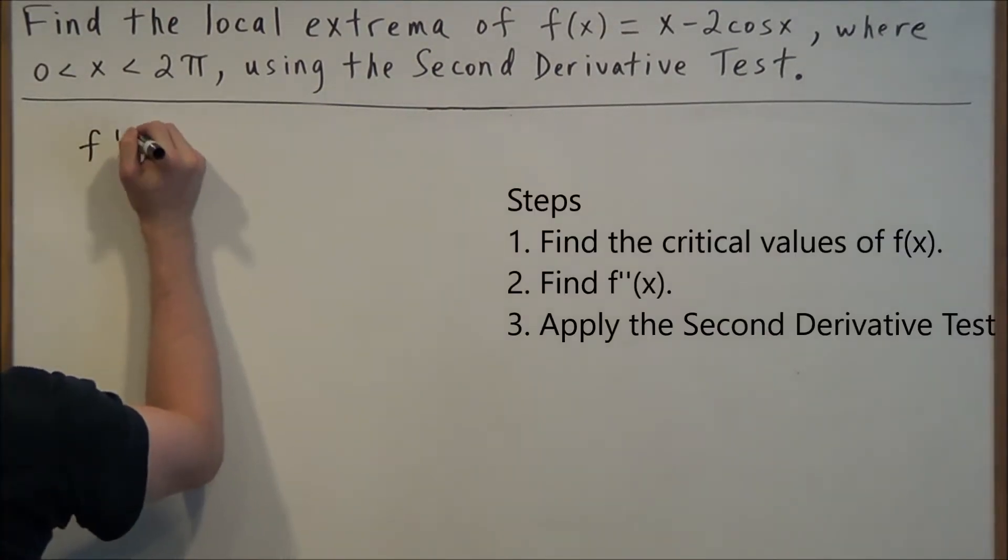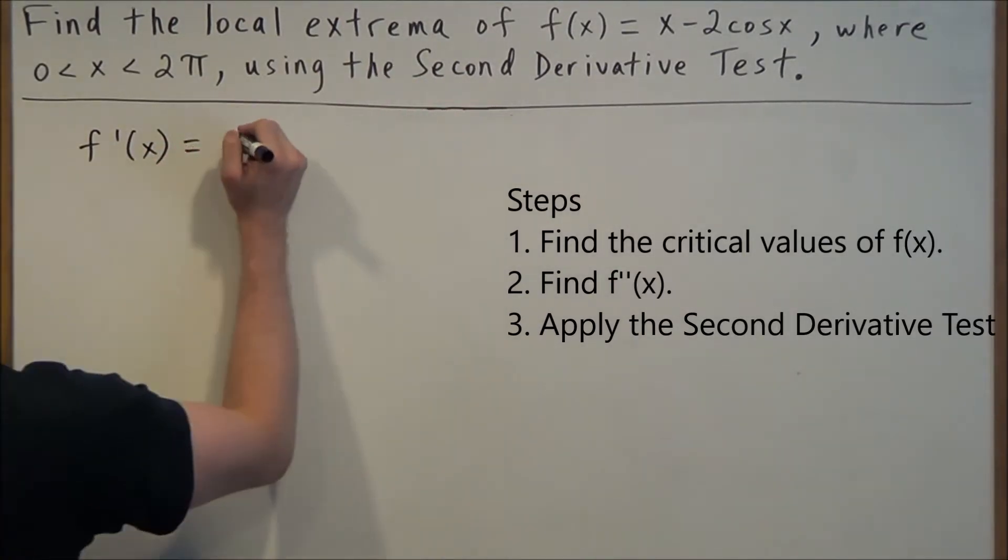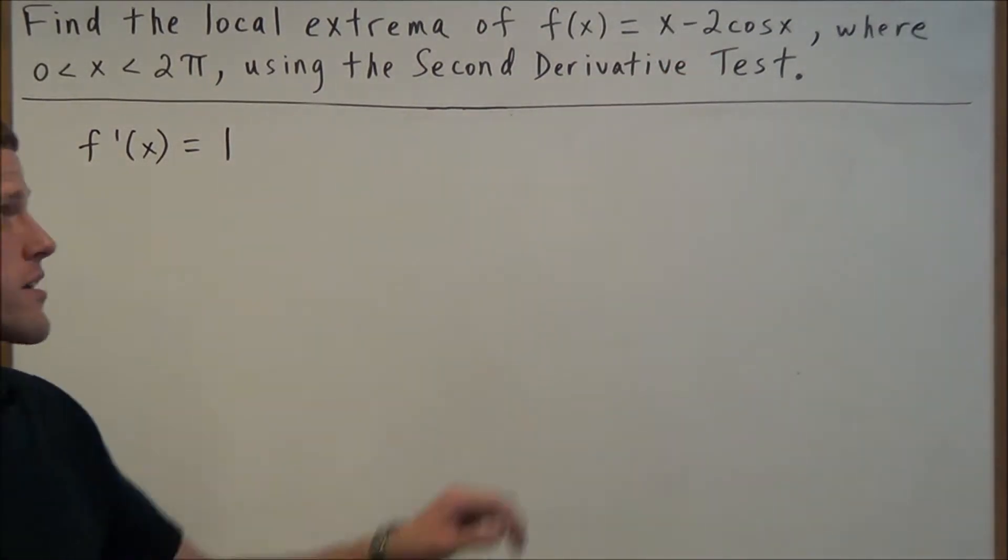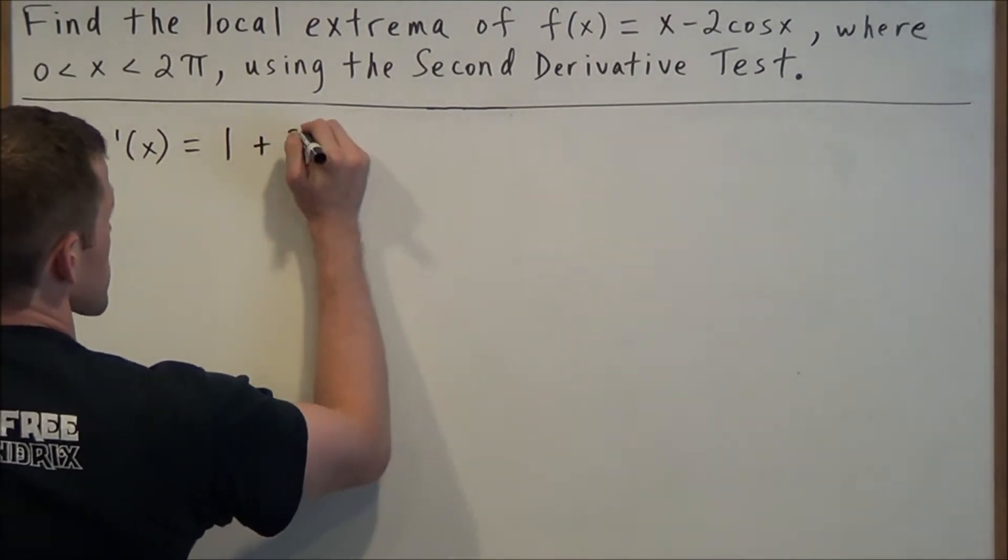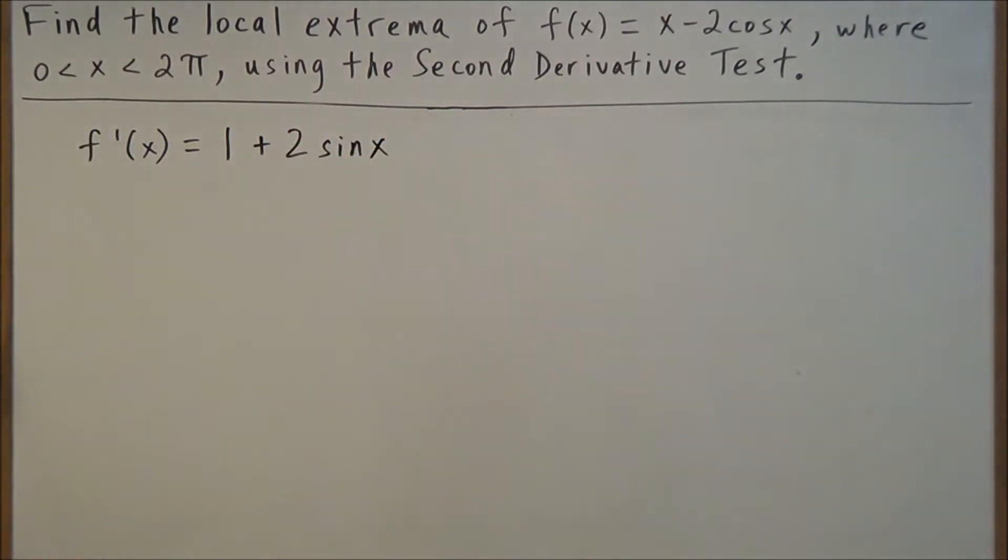So we have f'(x) is equal to, and the derivative of x is 1, and the derivative of cosine x is negative sine x, which will change that second part to plus 2sin(x). From this step, we need to set the first derivative equal to 0 so that we can find the critical values.